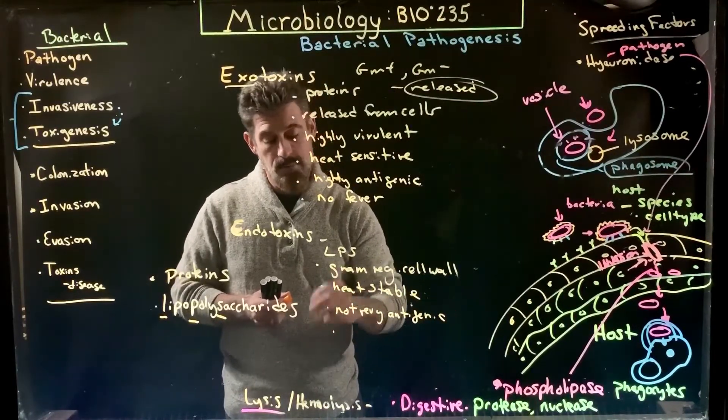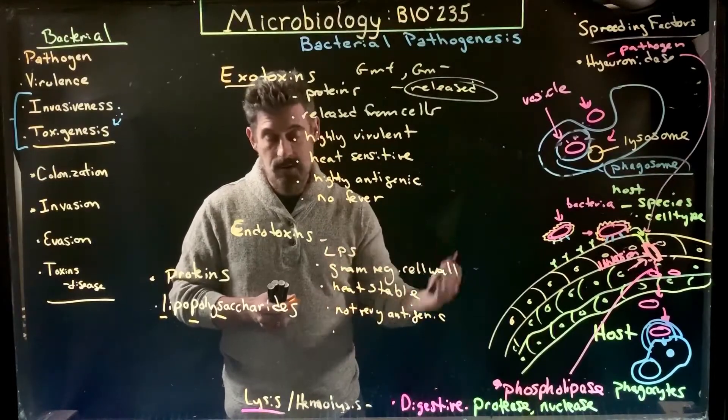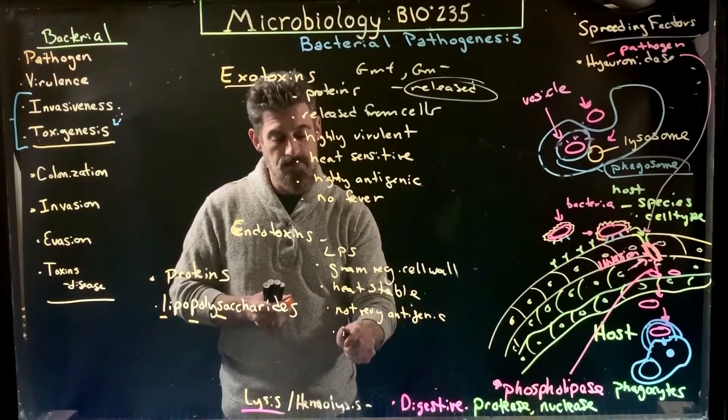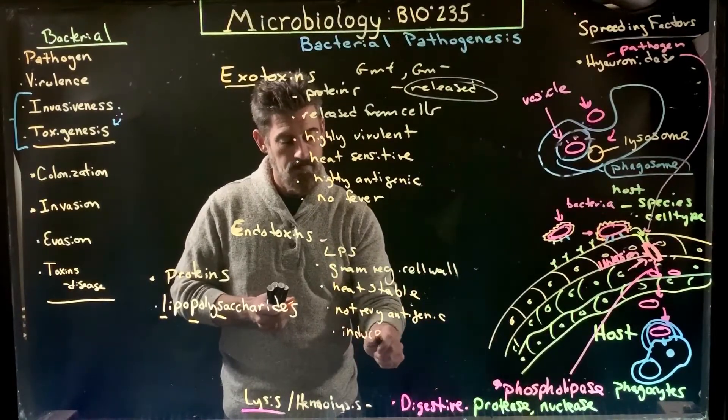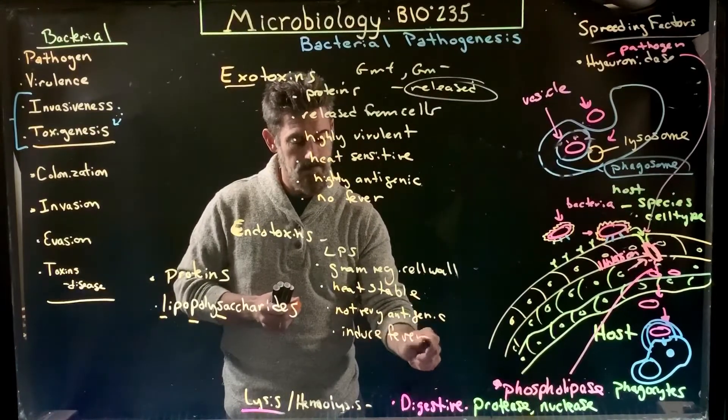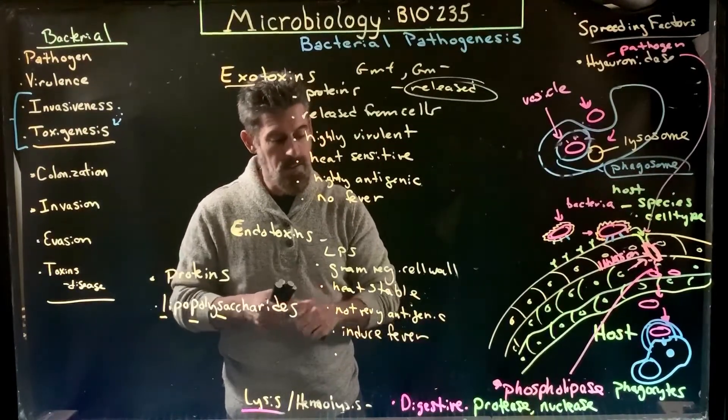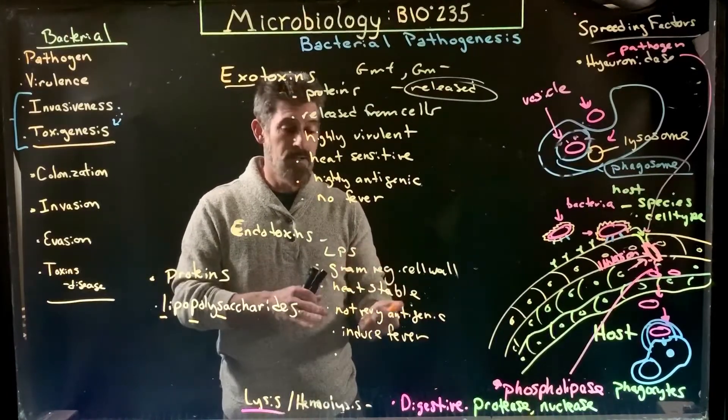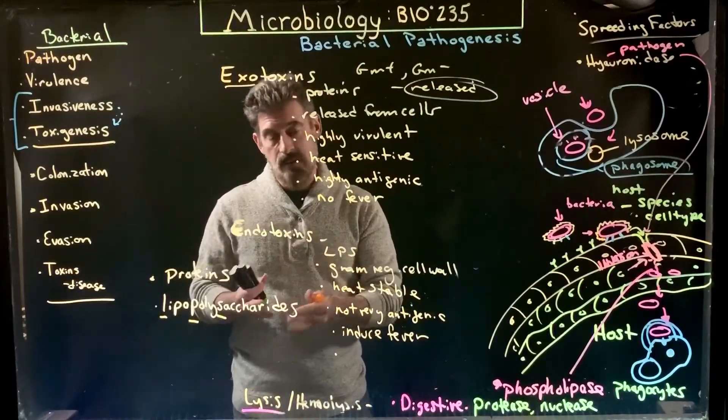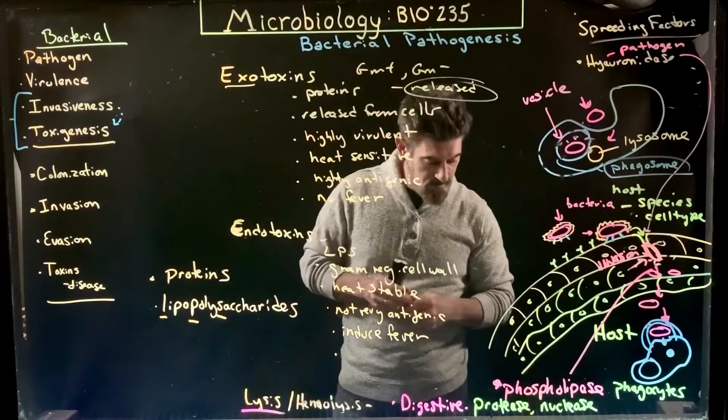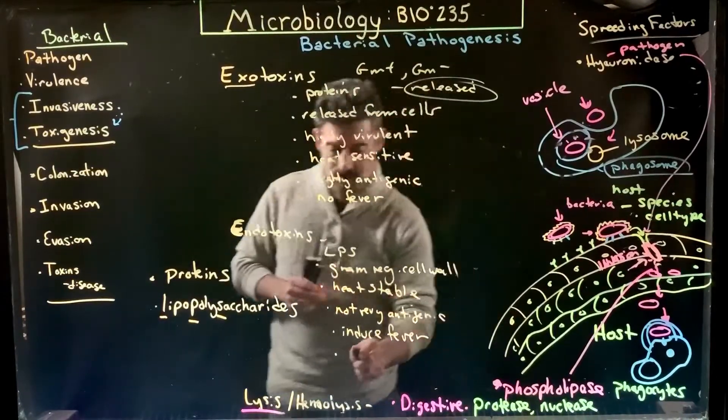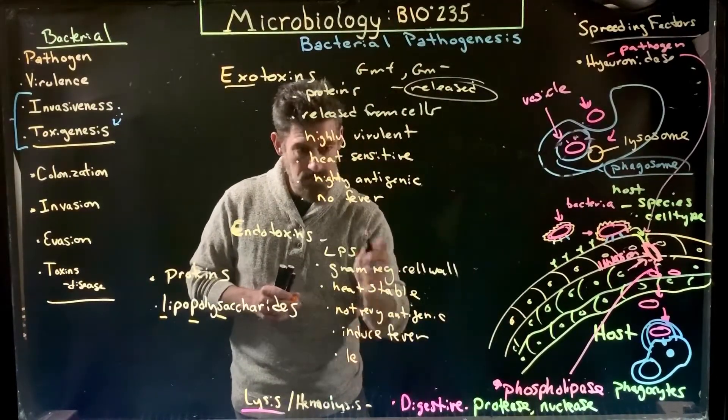So again, a food contaminated with a bacteria that has the endotoxins—you may kill the bacteria by heating it up but not destroy the toxins, so eating that, you would still become ill, equally as ill as if the bacteria were alive. It doesn't matter if the bacteria is alive or dead, you would still be affected by these endotoxins. In addition to being heat stable, they are not really antigenic, but they will interact with the mechanisms that induce fever. So typically, if you do get a fever, it's highly likely you're infected with a bacteria that has an endotoxin that is inducing that fever response. Typically they are much less potent or less virulent.